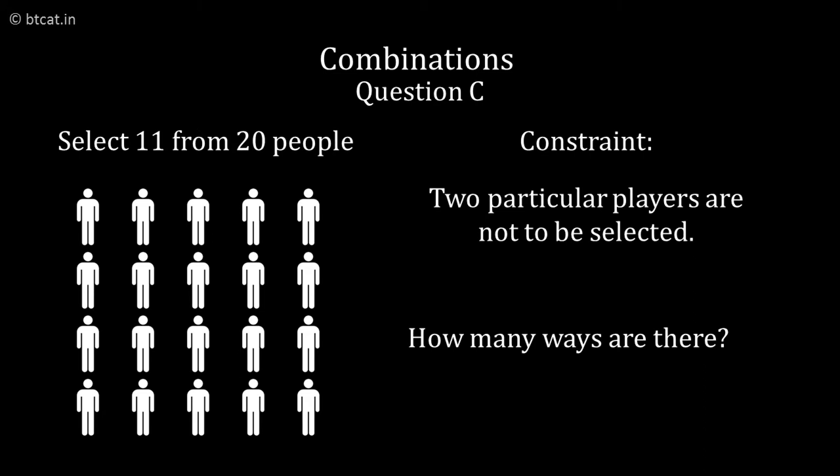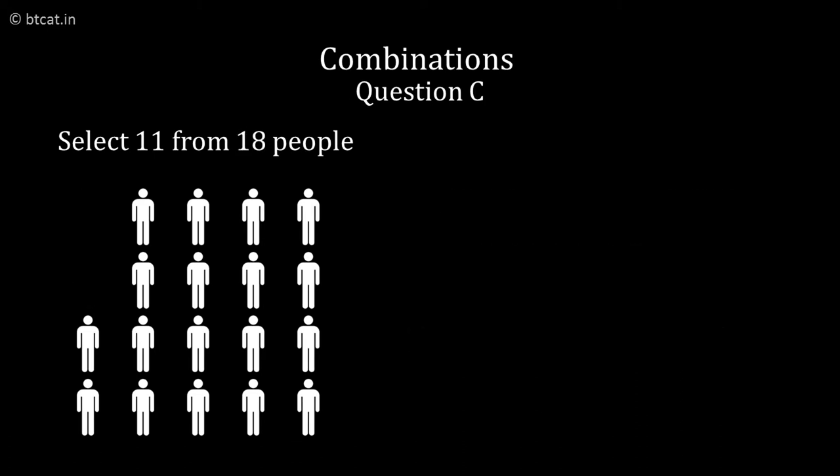The third part can be two particular players are not to be selected. They have just been given for the sake of name, they are not to be taken. Then how many ways? Now I have to make a team of 11 out of 18 people, not 20, because two players have to be eliminated out of them. So the answer is 18C11.